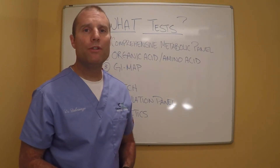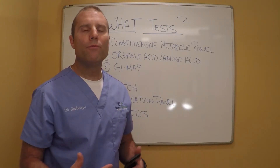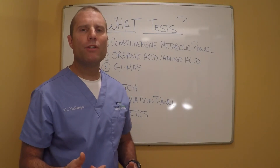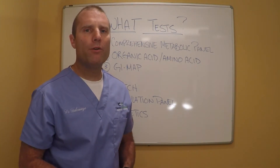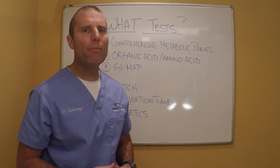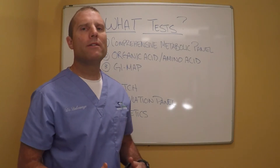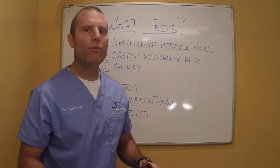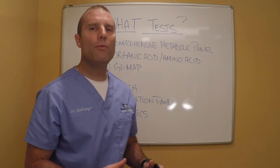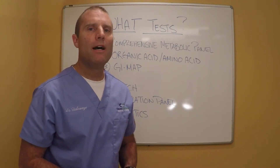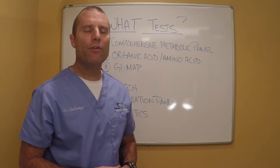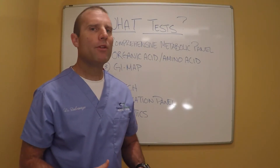My third go-to test would be the GI Map test. This test is fairly new — it uses DNA technology to look for pathogens, bacteria, and other things going on in the GI tract. It's essentially a stool test. Especially if my organic acid amino acid panel comes back showing dysbiosis and my patient has GI symptomatology, I'm pretty much going to run this. I want to find out what organisms I'm dealing with before I get into anything along the methylation standpoint. If the gut is not healthy, I don't want to load a bunch of nutrients into the system or feed a pathogen. I want to get rid of those pathogens, calm down any overgrowth of opportunistic organisms, and reestablish a healthy gut flora before I start loading methylation support.